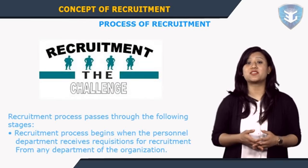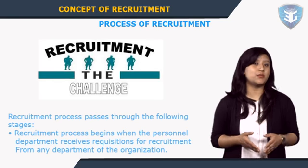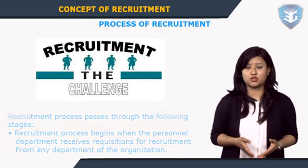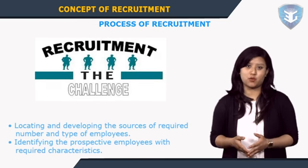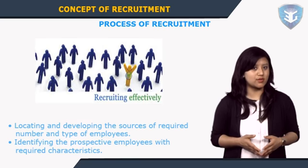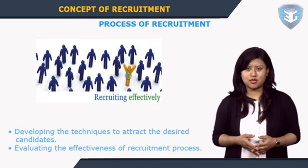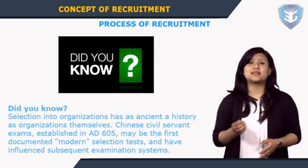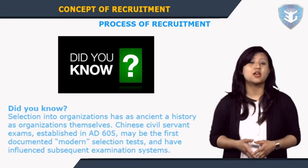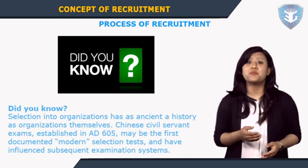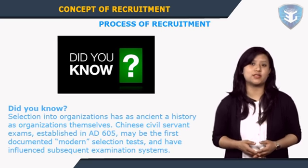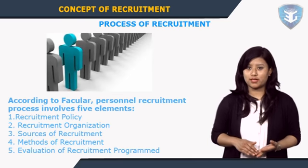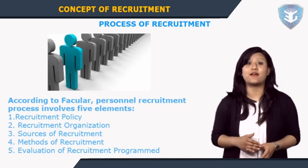The recruitment process begins when the personnel department receives requisitions for recruitment from any department of the organization. The requisitions contain details about the position, locating and developing the sources of required number and type of employees, identifying prospective employees with required characteristics, and developing techniques to attract desired candidates. According to faculty, the recruitment process involves five elements: recruitment policy, recruitment organization, sources of recruitment, methods of recruitment, and evaluation of the recruitment program.